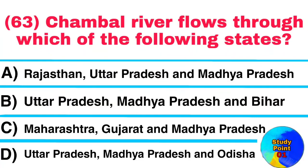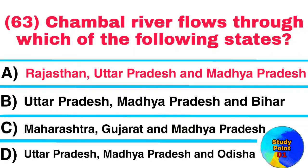Question No. 63. Chambal River flows through which of the following states? Answer: Rajasthan, Uttar Pradesh, and Madhya Pradesh.